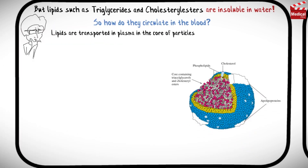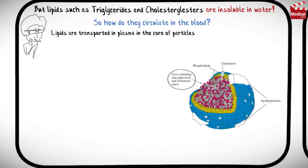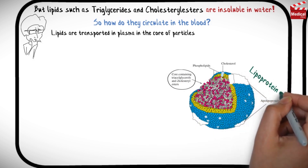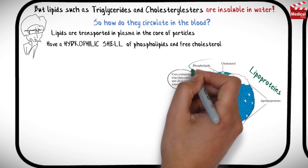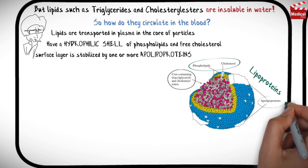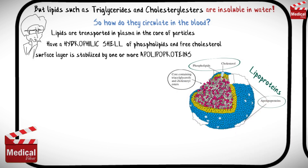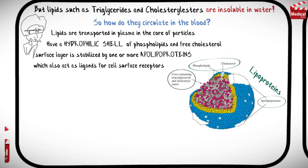Lipids are transported in plasma in the core of particles known as lipoproteins, that have a hydrophilic shell of phospholipids and free cholesterol. This surface layer is stabilized by one or more apolipoproteins, which also act as ligands for cell surface receptors.